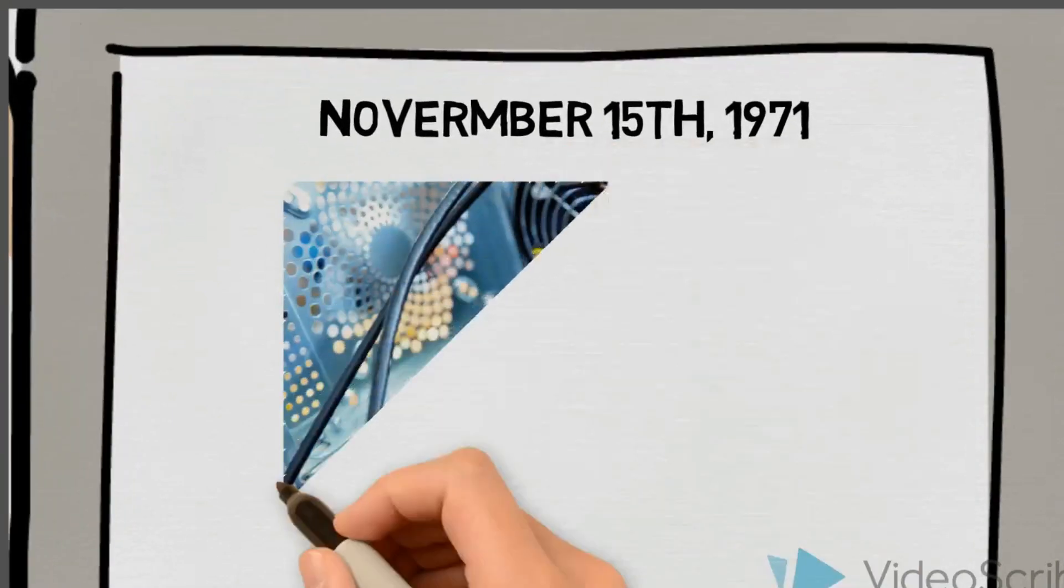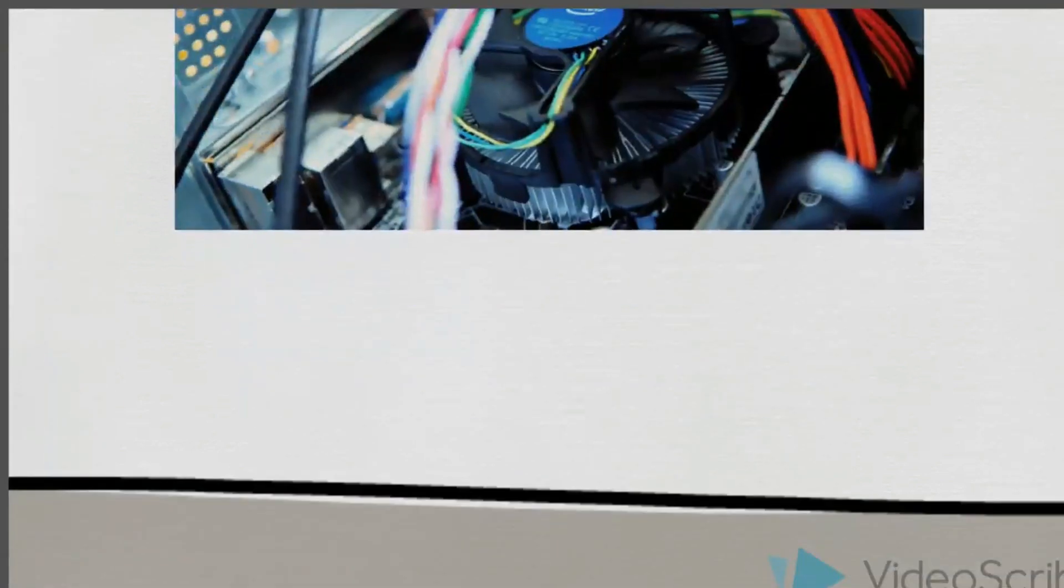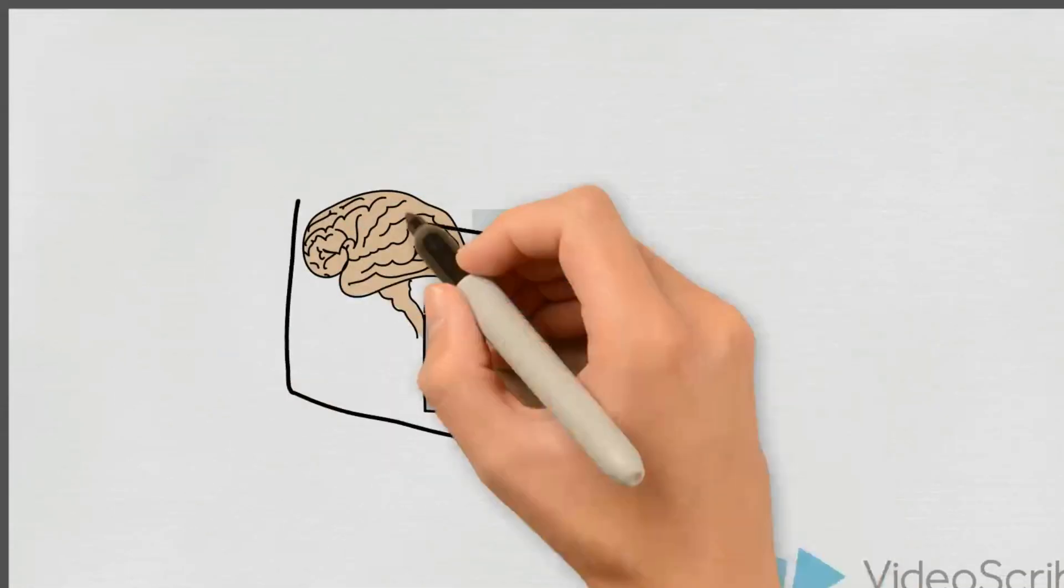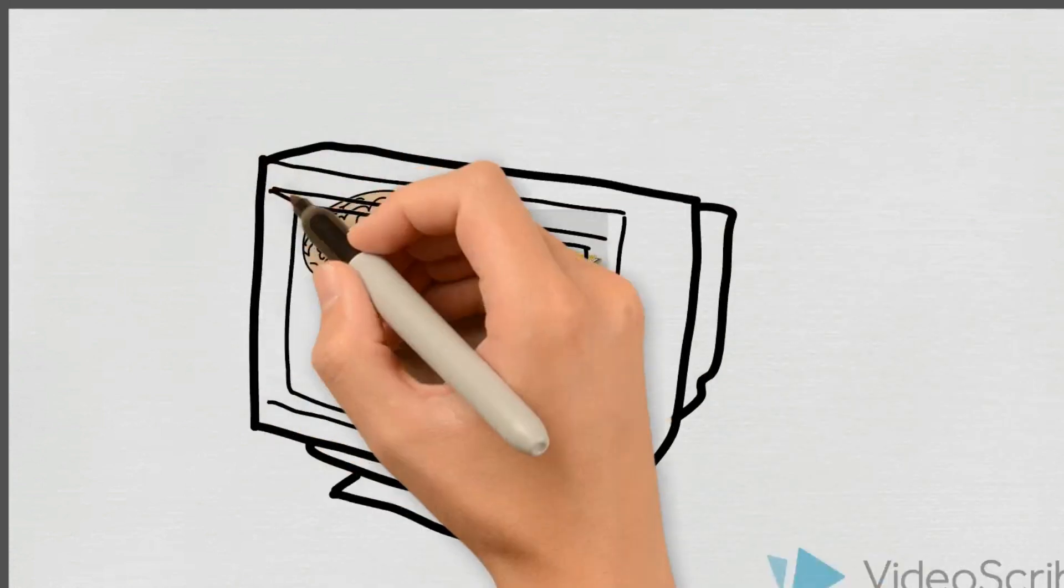However, it was on April 1, 1974 that Intel released its 8080 CPU which was the first chip that was used in a personal computer.